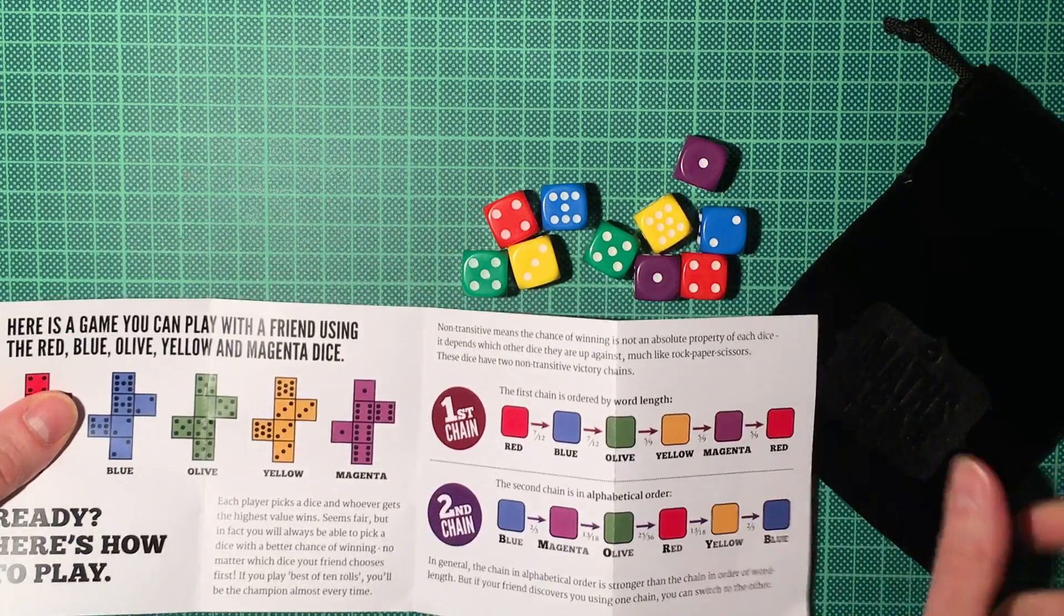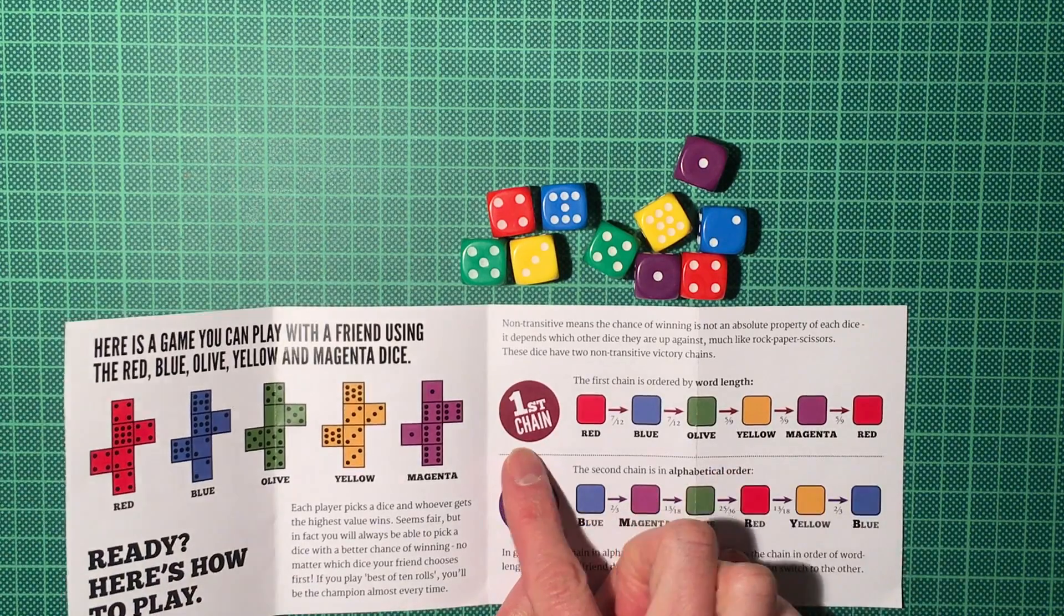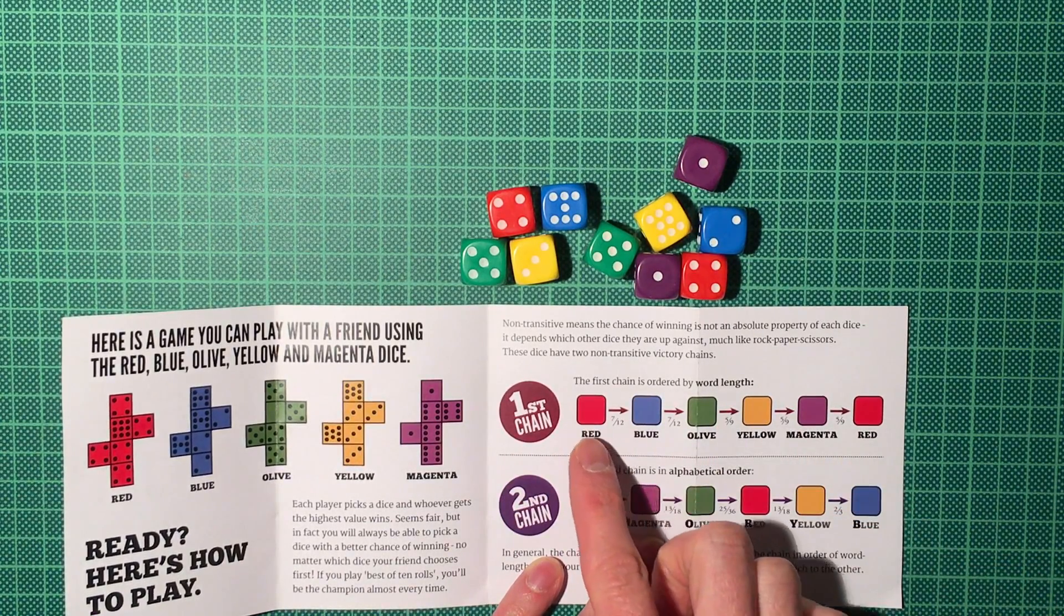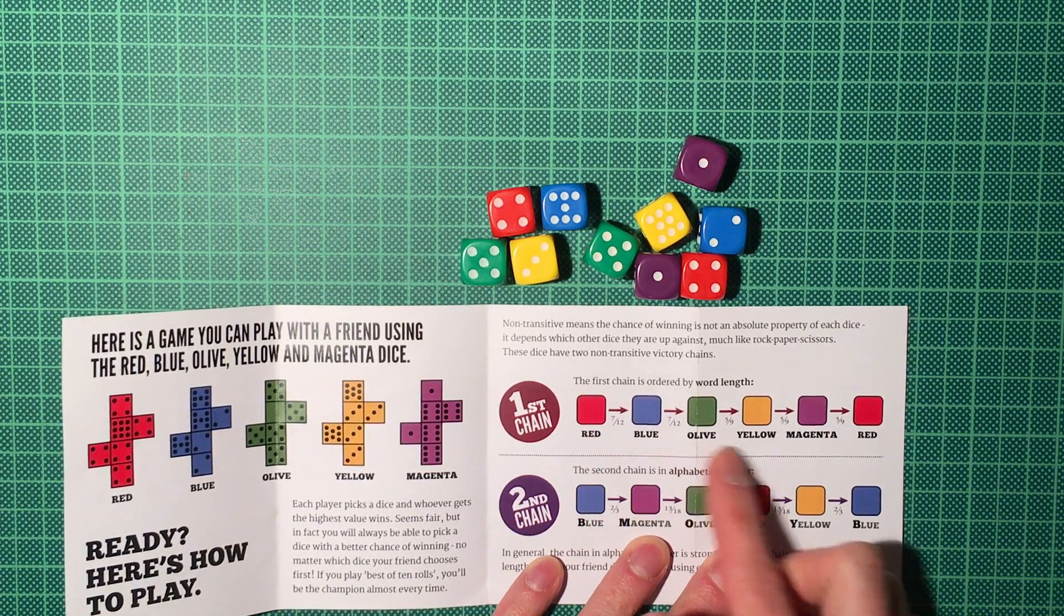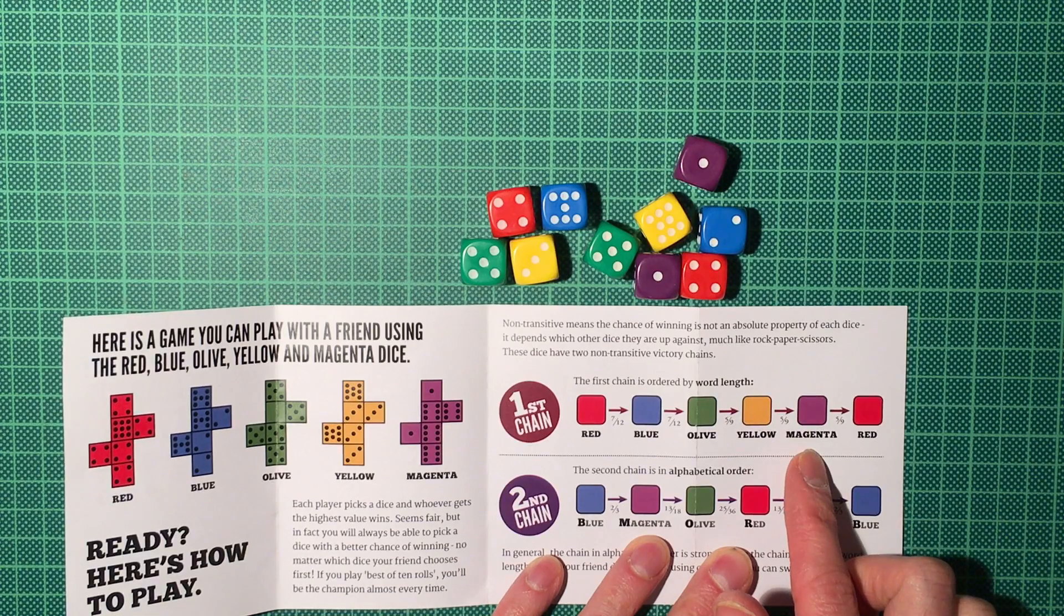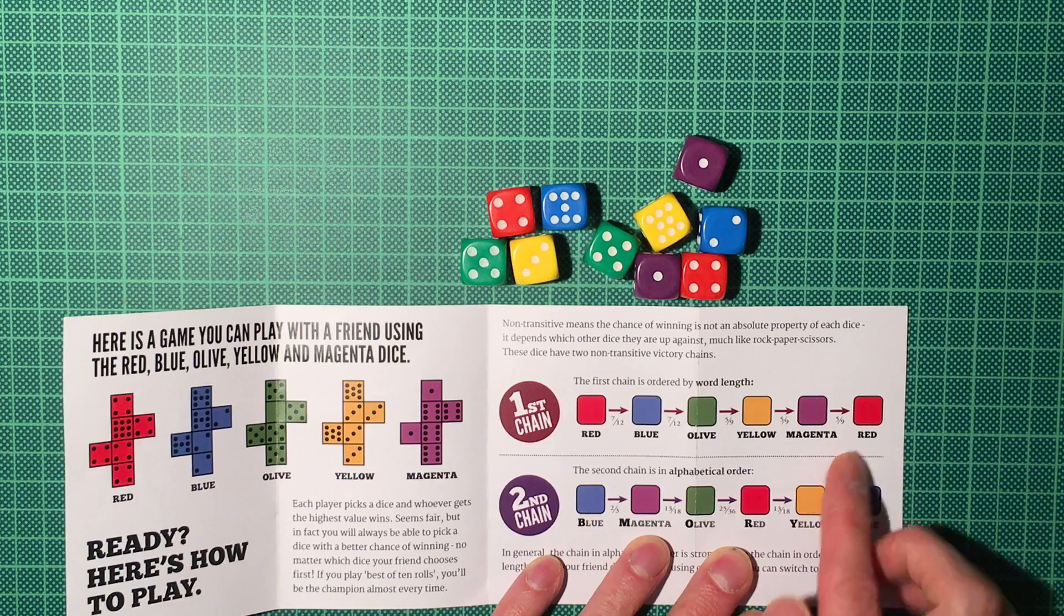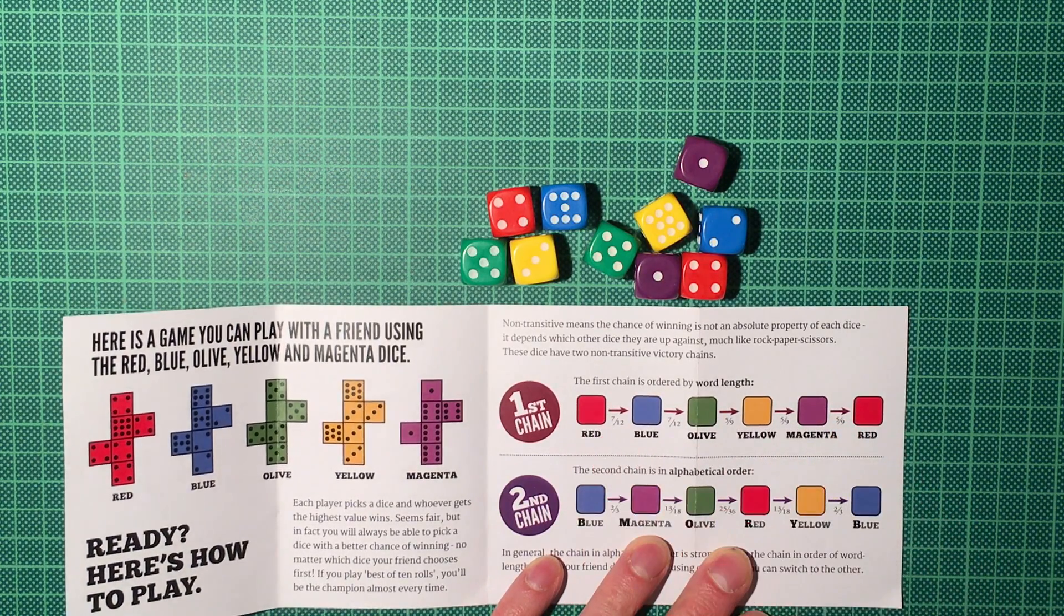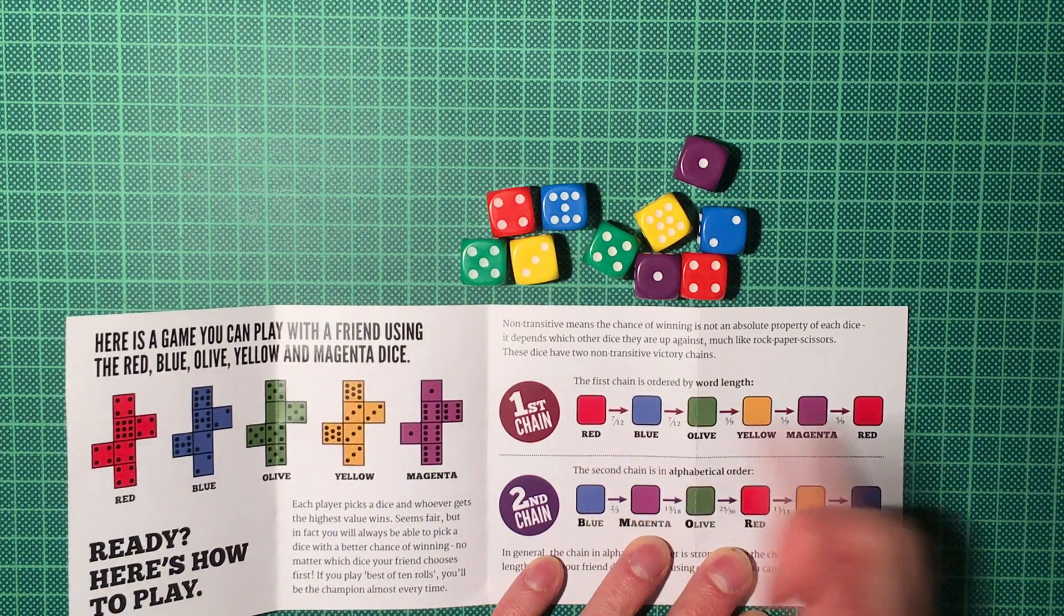You can order them in two ways. You have the first chain, which is ordered by word length. So red is beaten by blue, which is beaten by olive, which is beaten by yellow, which is beaten by magenta or purple, which in turn can be beaten by red. And you won't win with every throw, but here are the odds. For example, blue beats red seven out of 12 times.